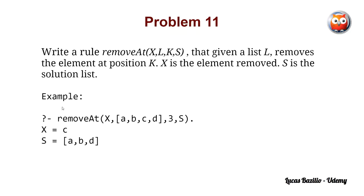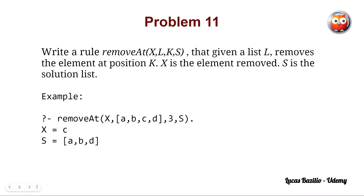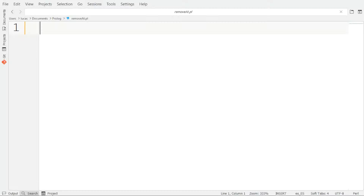Here we can see a very simple example. We apply this rule with the list a, b, c, d, and we want to remove the element at position 3. When we apply this rule, the solution is X equal to C, because C is the element that has been removed, and the solution list S is a, b, d — basically the same list as the original one but removing the third element, which is C. The rule is quite simple to understand.